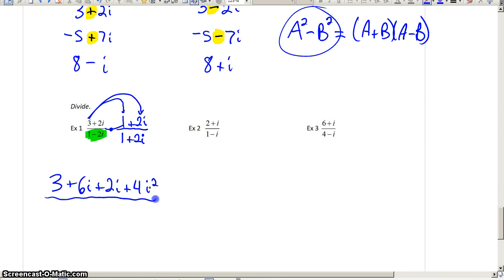Down below, we could multiply as well. 1 times 1 is 1. 1 times 2i would be 2i. Negative 2i times 1 would be minus 2i. Negative 2i times plus 2i would be negative 4i squared. So, again, this is just coming from the foiling.